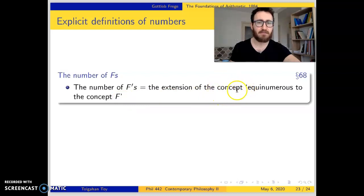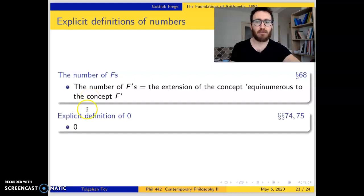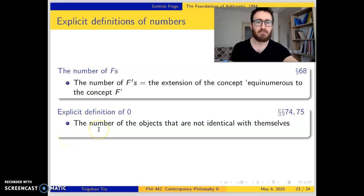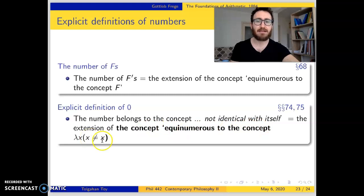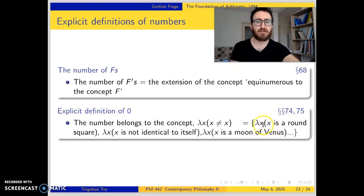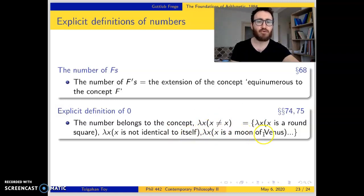This is a second-order concept because it is about other concepts — under it fall all those concepts that are equinumerous to F. For zero: zero belongs to the concept of objects not identical with themselves, since there are zero objects not identical with themselves. So the number zero is the number that belongs to the concept 'not identical with itself.' The explicit definition for zero is: the extension of the concept 'equinumerous to the concept λx[x is not x].' Those concepts falling under this extension include: λx[x is a round square], λx[x is not identical to itself], λx[x is a moon of Venus] — all concepts under which no object falls.